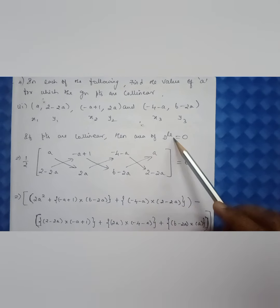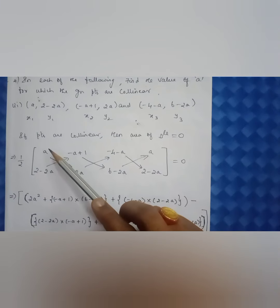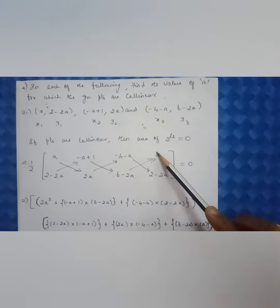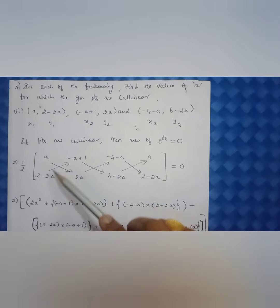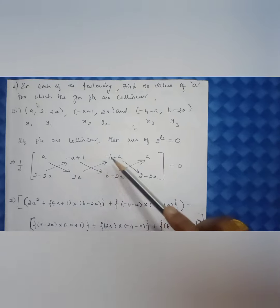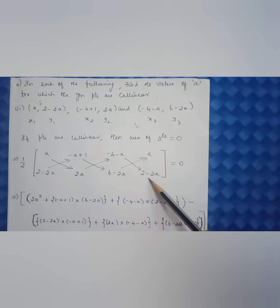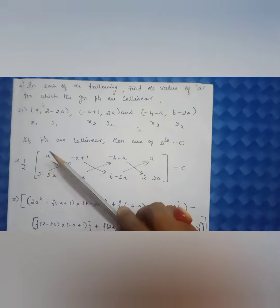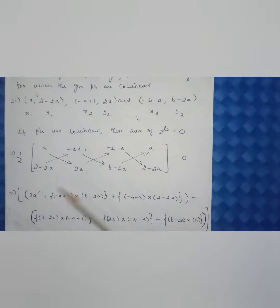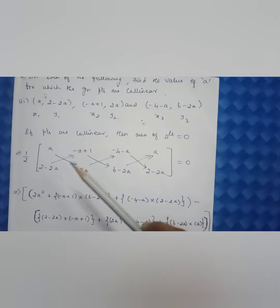If the points are collinear, the area of the triangle will be equal to zero. So: half × | x₁(y₂−y₃) + x₂(y₃−y₁) + x₃(y₁−y₂) | = 0. Writing the coordinates: (a, 2−2a), (−a+1, 2a−4), (−a, 6−2a), then (a, 2−2a) again. Now I will cross-multiply. The coordinates are sensitive — they have negative signs and are expressions.